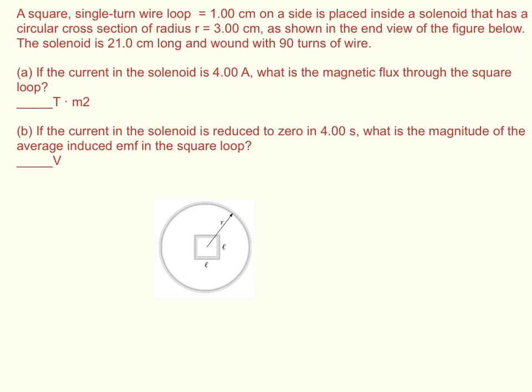Part A: if the current in the solenoid is four amps, what is the magnetic flux through the square loop? And Part B: if the current in the solenoid is reduced to zero in four seconds, what is the magnitude of the average induced EMF in the square loop? So the first part asks us to